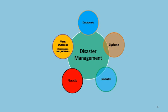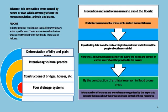Let us discuss the first disaster: floods. Floods are the result of continuous rainfall for several days in a specific area. There are various other factors directly linked with floods. The first is deforestation of hilly and plain areas, which is the major cause of floods.